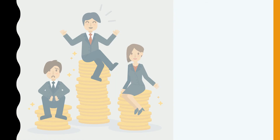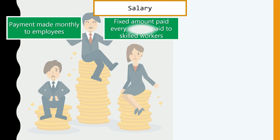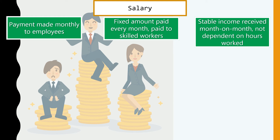Salary is payment made monthly to employees. Full-time workers in an organization receive a basic salary paid at the end of each month — normally a fixed amount paid to skilled workers such as managers and executives. It is a stable income, unlike commission which depends on sales, and it is not dependent on hours worked either. Contractually, a specified number of hours is agreed upon.